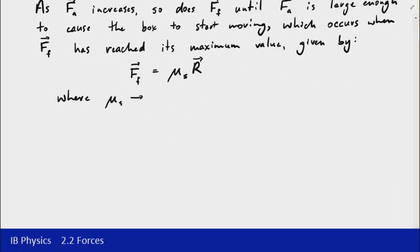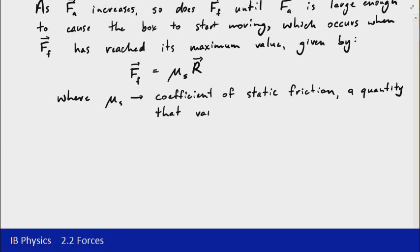μs is actually known as the coefficient of static friction. So notice the subscript S indicates static. And that is a quantity that basically it's going to depend on the surfaces that are involved.